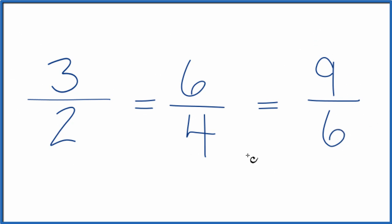And all of these are equal. If you divide 3 by 2, 6 by 4, or 9 by 6, you'll get 1.5. They have the same value, just represented differently.